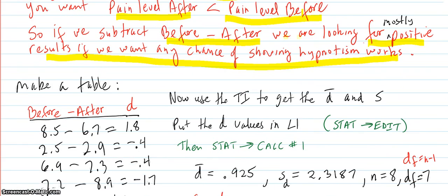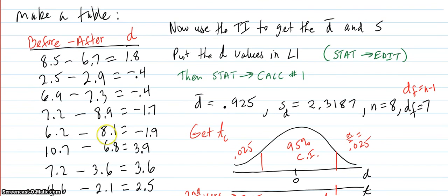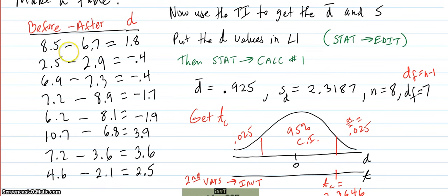So we're going to make a table. Before minus after, we took the numbers out of the other table, subtracted before minus after for each one, and got all these data.